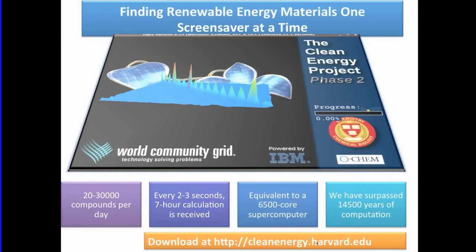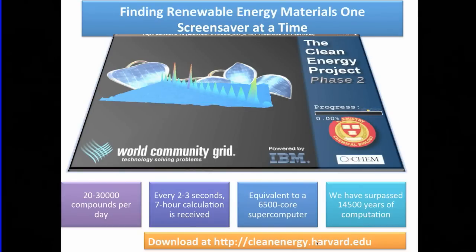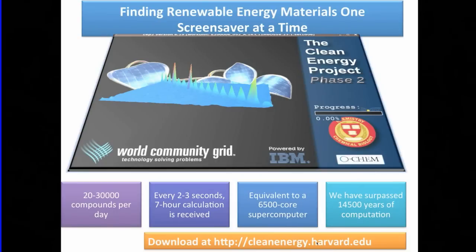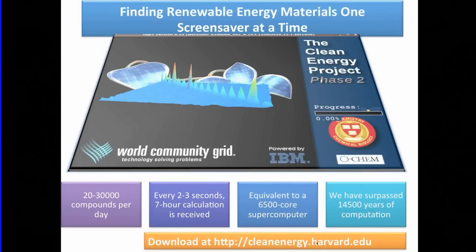We have surpassed about 14,500 years of computation — this is probably the largest single use of the Q-Chem code that we know of. If you were to start a computer back when there were mammoths around the earth during the ice age, that's roughly the amount of computer time we have used — all in about two or three years of running phase two of the Clean Energy Project, which employs Q-Chem.